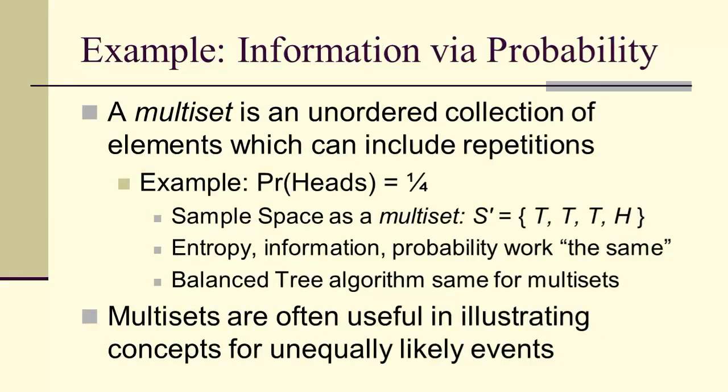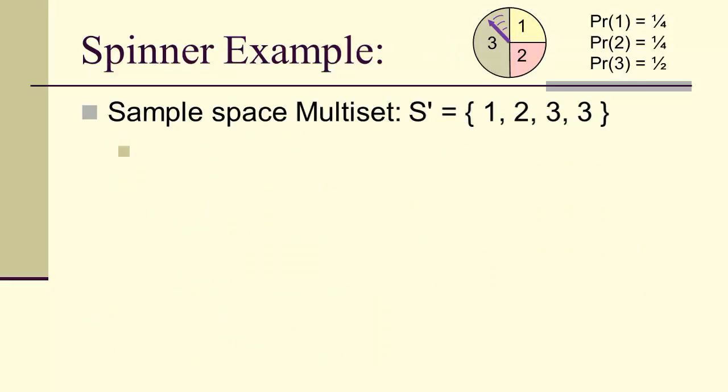Let's look at an example. A multi-set is essentially a set, but you can have repetitions. And this is nice for representing concepts or representing unequally likely events. For example, if you've got probability of heads equals a fourth, we can have a multi-set with three tails and a head. Everything works the same for multi-sets as it does for ordinary sets. The sample space is a multi-set.